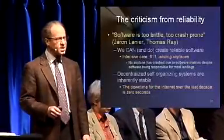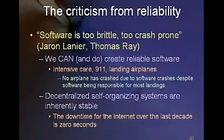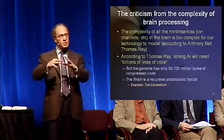The criticism that software is too brittle and crash-prone: we can and do create reliable systems — 9-1-1 intensive care systems, landing airplanes. The majority of airplane landings are controlled by software, and the number of times a software crash caused an airplane crash is zero — the same is not true for human landings. If we create software technology that's decentralized and self-organizing, it's inherently very stable — the quintessential example is the Internet, which has been down for zero seconds over the last decade. The brain-too-complex objection: Thomas Ray said it would take billions of lines of code, but that's looking at apparent complexity, not the complexity of the design contained in the genome. The amount of complexity is a level we can manage.